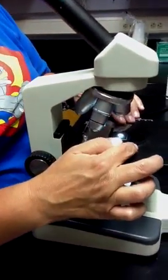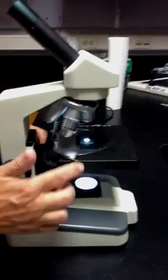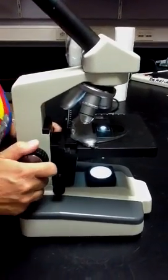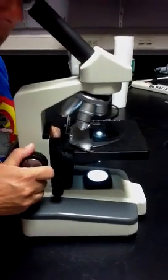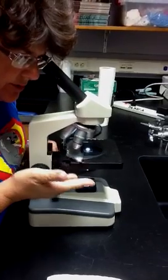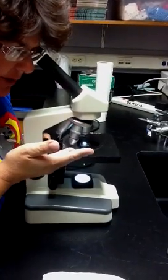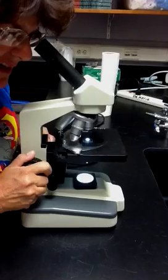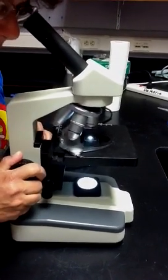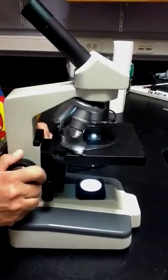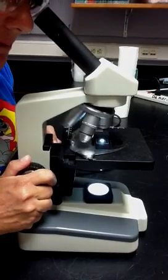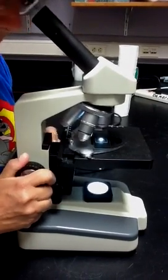Now, once you've got your slide in place, the stage all the way down, only use this course adjustment to start looking through the eyepiece. Slowly bring the stage up closer to the 4x objective lens. And you should see something appear in your field of vision. Sometimes you will just see dots, but you should see something appear.